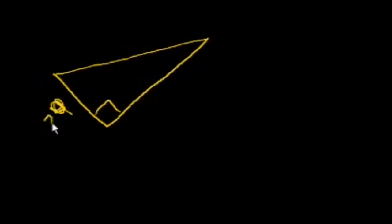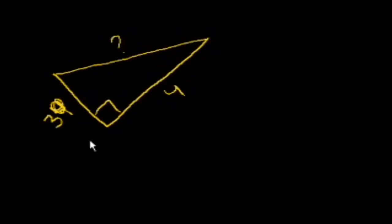So we have a triangle, and remember it has to be a right triangle. Let's say that this is the right angle here — it's 90 degrees. And if I were to tell you that one side is of length 3 and the other side is of length 4, we want to figure out the length of the remaining side.